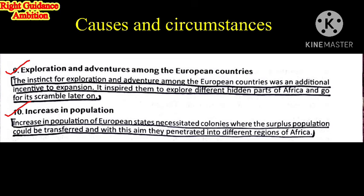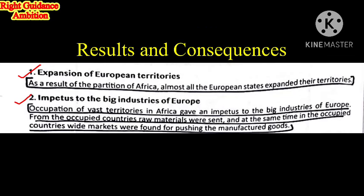Last point on causes: Increase in Population. The increase in population of European states necessitated colonies where the surplus population could be transferred. When the population increased in Europe, it was very difficult to provide jobs, houses, and basic demands for all. So they needed more colonies where they could settle people and provide jobs. Now the heading: Results and Consequences.